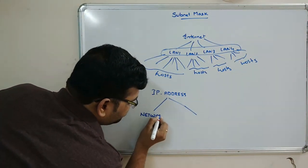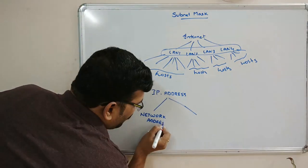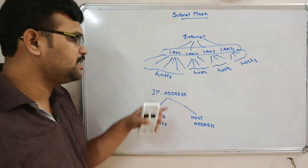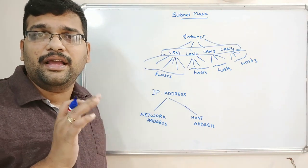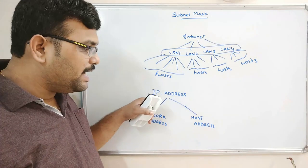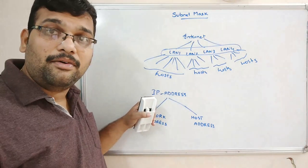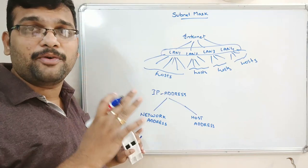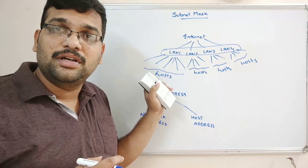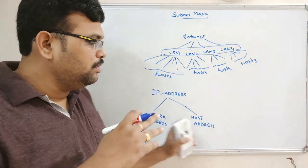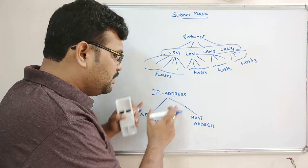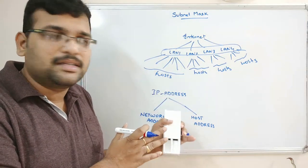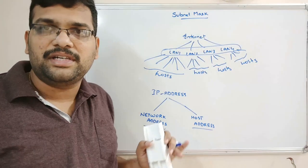Those two concepts are network address and host address. As discussed in the previous session, an IP address is a unique identifier for any computer or device. That address consists of both the network address — meaning which network the packet or data should be transferred to — and the host address, identifying the particular host within that network.